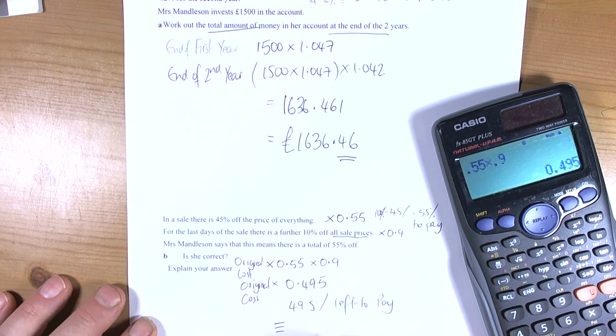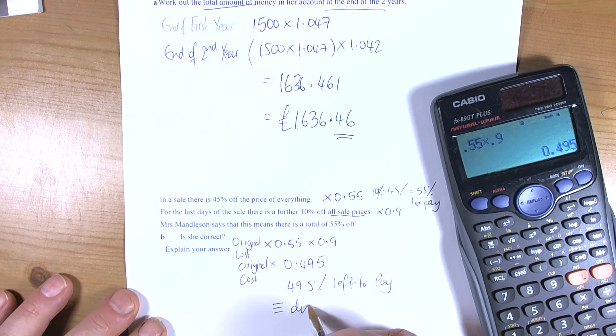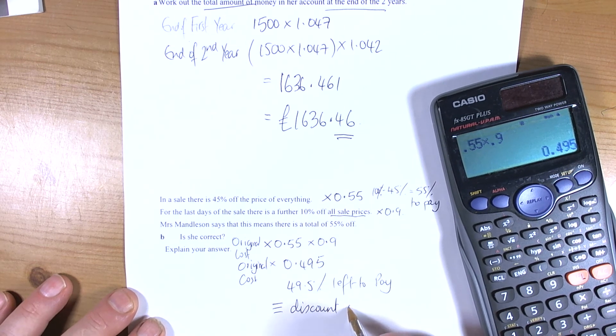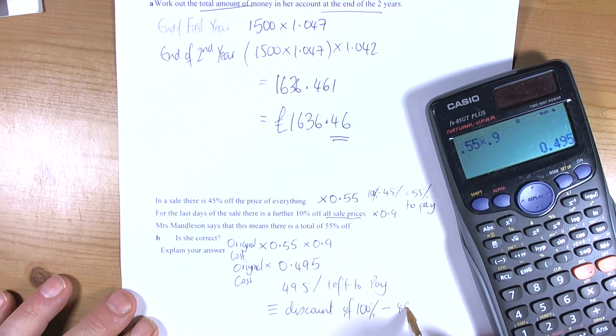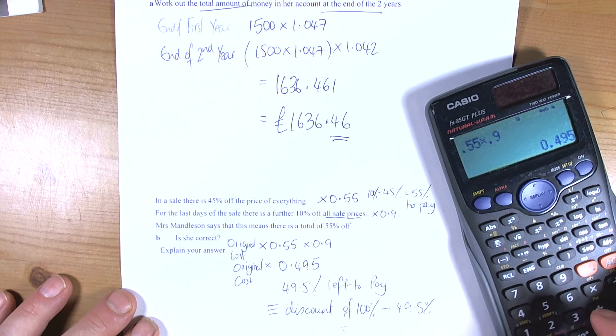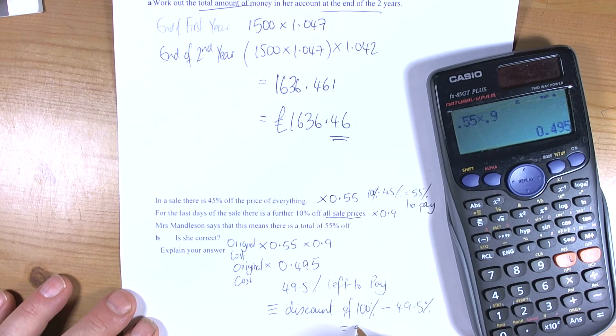Which is equivalent to a discount of, from the original 100%, take away the 49.5% and you're left with 50.5%. So we had a discount of 50.5%.